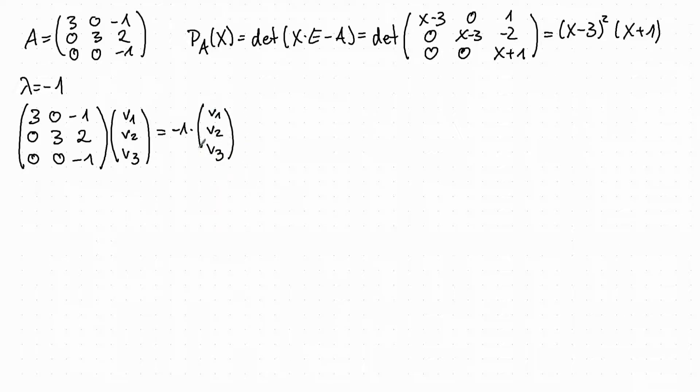This gives us a system of linear equations, which is for the first row 3v1 minus v3 equals minus v1. The second row gives us 3v2 plus 2v3 equals minus v2. And the third is minus v3 equals minus v3. This condition is useless and the other two conditions are equivalent to 4v1 equals v3 and minus 2v2 equals v3.